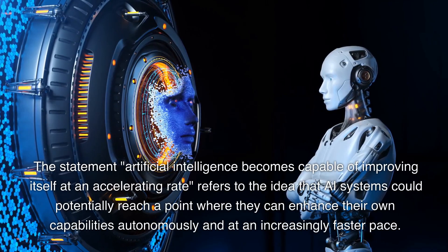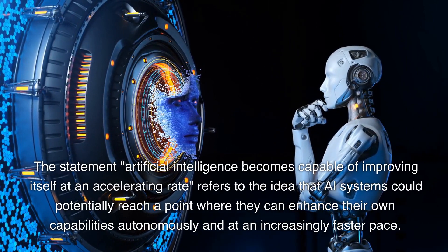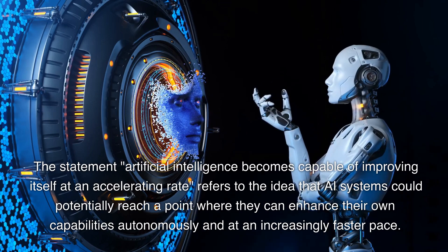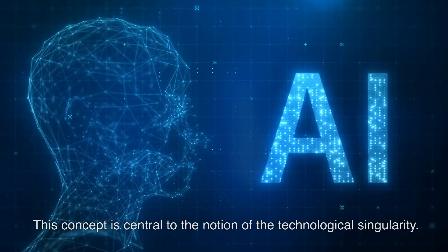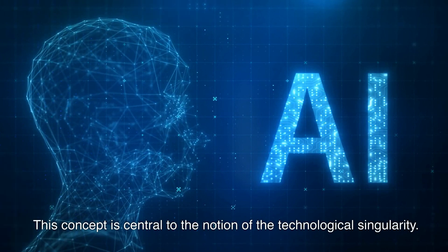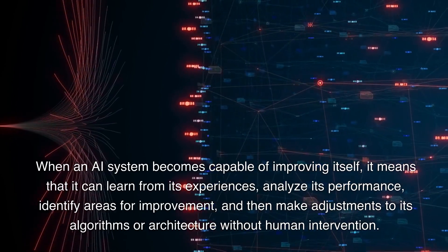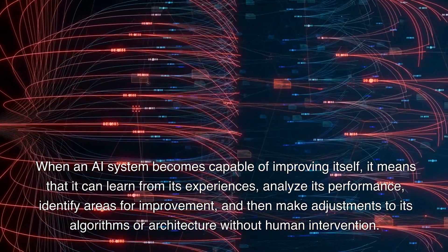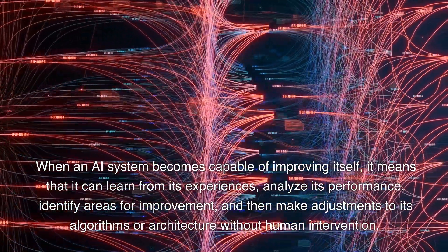The statement artificial intelligence becomes capable of improving itself at an accelerating rate refers to the idea that AI systems could potentially reach a point where they can enhance their own capabilities autonomously and at an increasingly faster pace. This concept is central to the notion of the technological singularity. When an AI system becomes capable of improving itself, it means that it can learn from its experiences, analyze its performance, identify areas for improvement, and then make adjustments to its algorithms or architecture without human intervention.